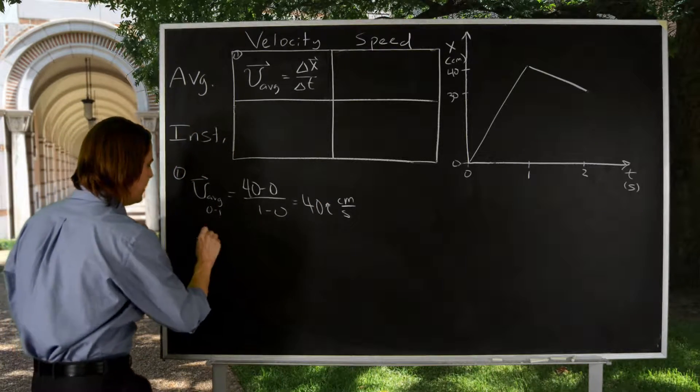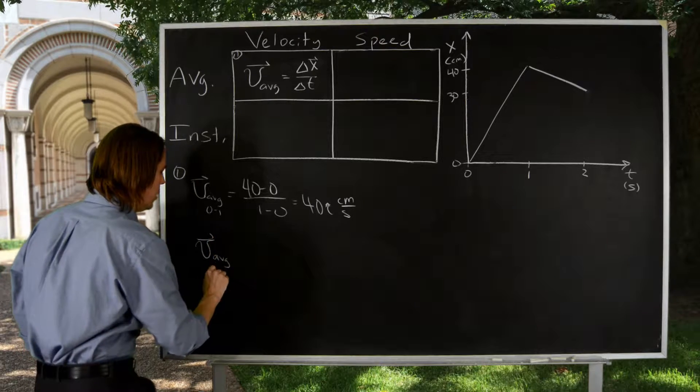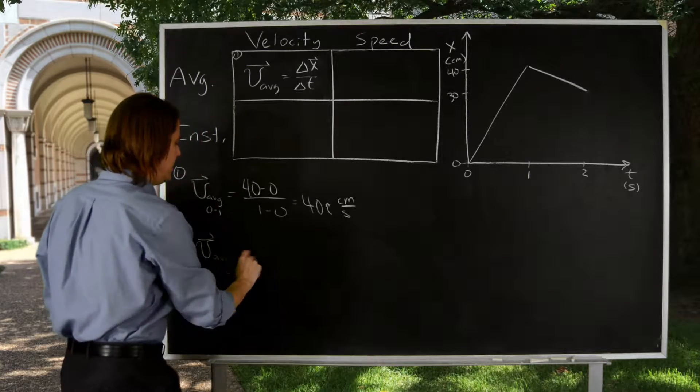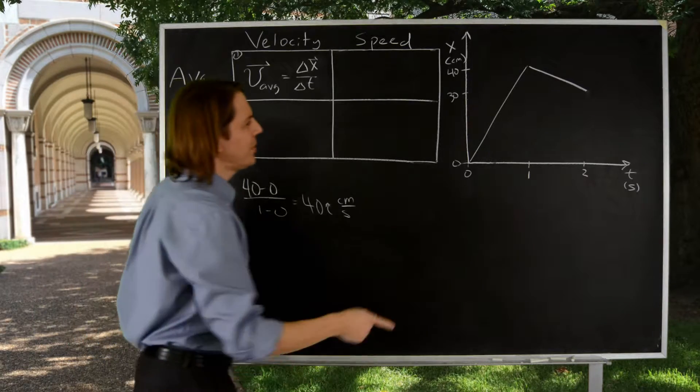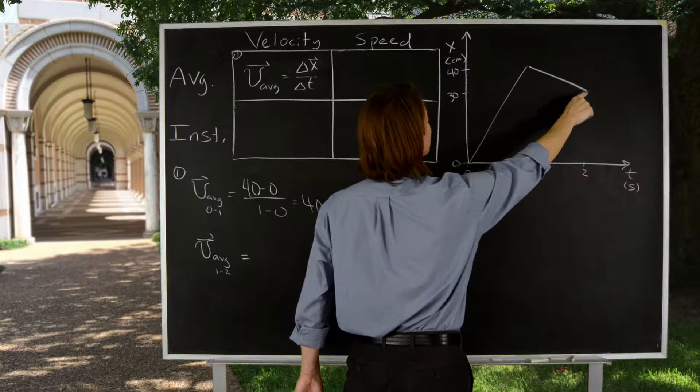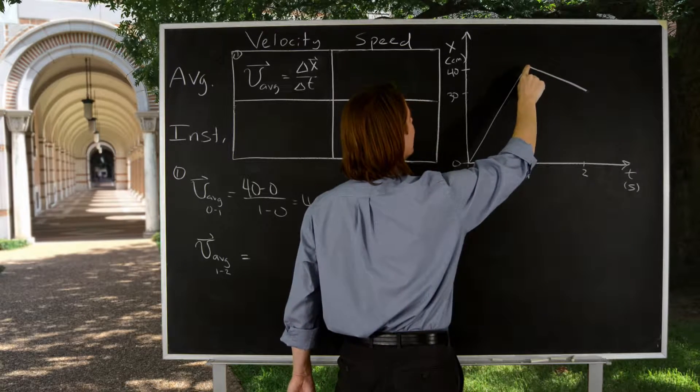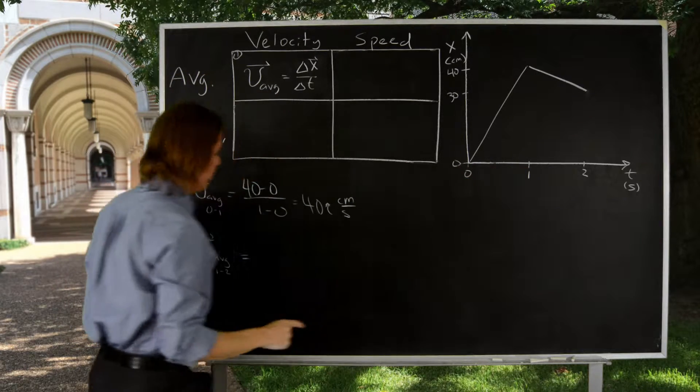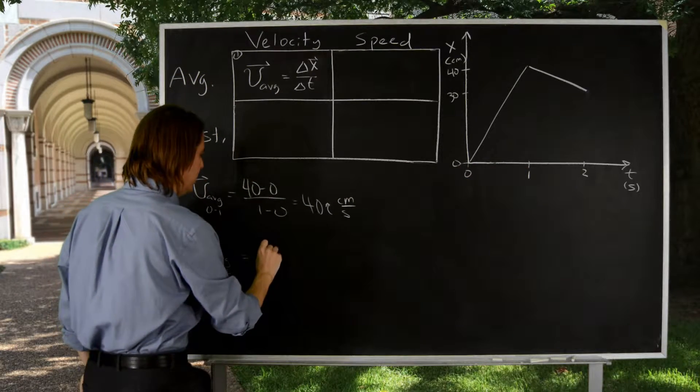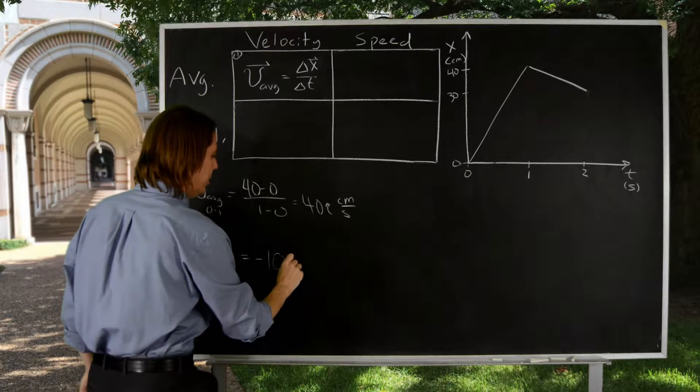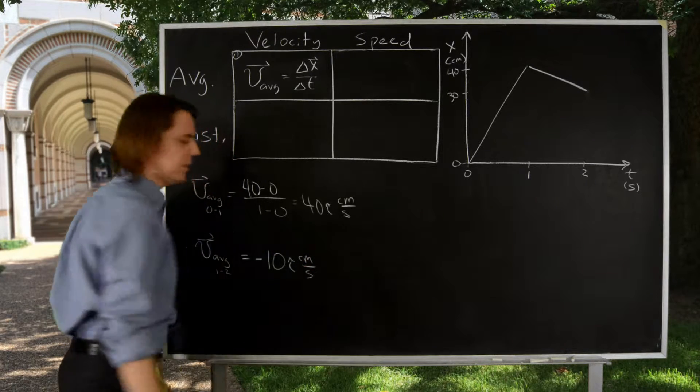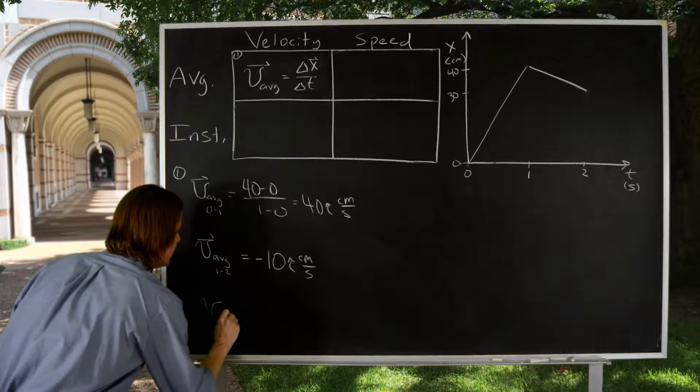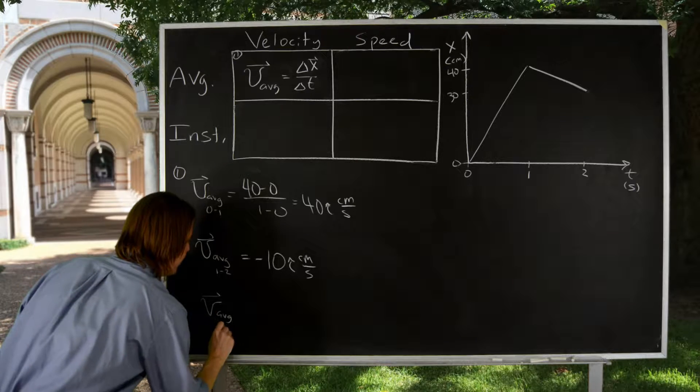Let's do another one. The average velocity from the interval from one to two. We'll leave out the algebra this time, that would be final minus initial 30 minus 40, so that's negative 10 over the interval of one. So minus 10 over one is minus 10 i hat centimeters per second.